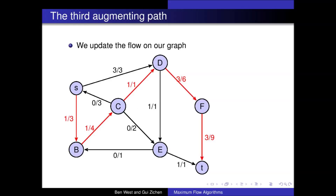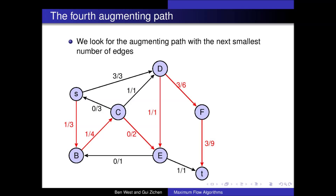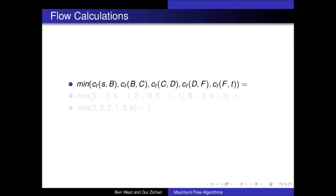Again we update our graph to show the flow now being pushed along each edge. We look for the next shortest augmenting path and find a path of length 6, comprising of edges SB, BC, CE, ED, DF, and FT. Notice that we can push 1 unit of flow from vertex E to D, as we already pushed 1 unit of flow from vertex D to E in the previous path. Again we calculate the flow value that can be pushed along this path. We find it has residual capacities of 2, 3, 2, 1, 3, and 6. Therefore we can push 1 unit of flow down this particular path.